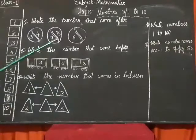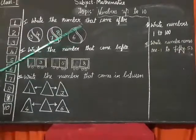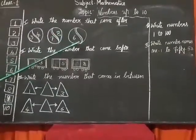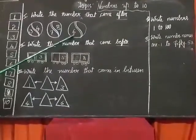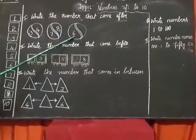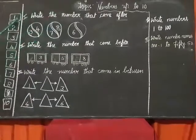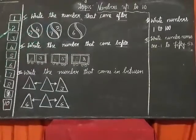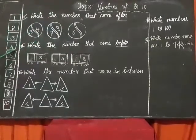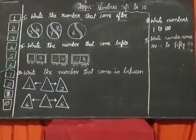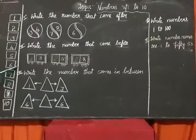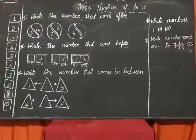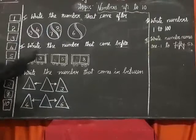Next, you see one more ball. See the number 6. What comes after 6? 1, 2, 3, 4, 5, 6, 7. Yes. What comes after 6? 7. Very good.